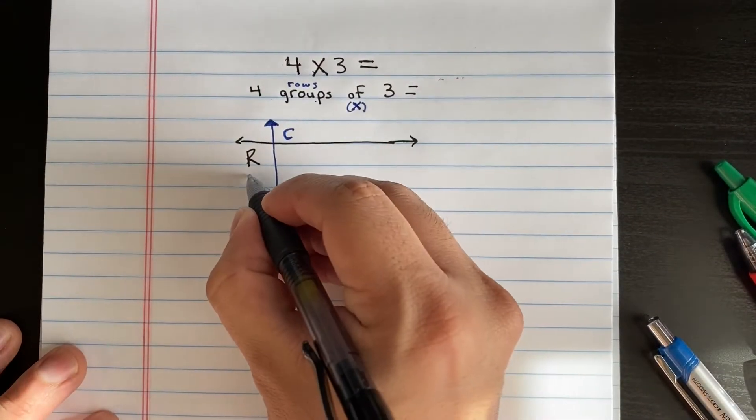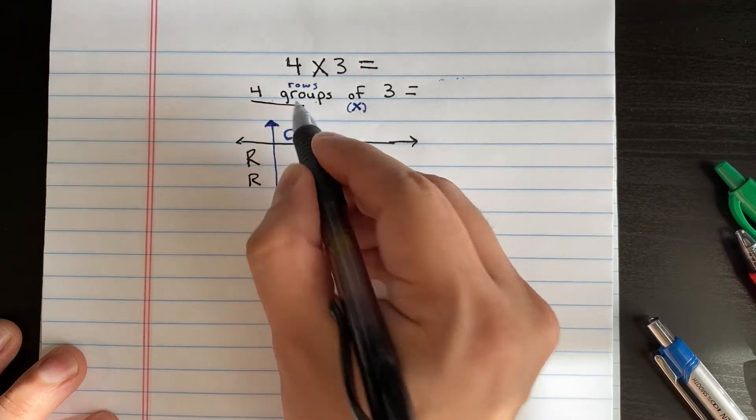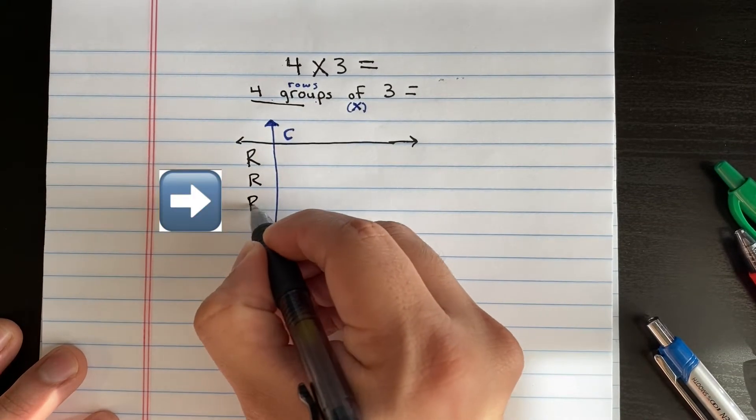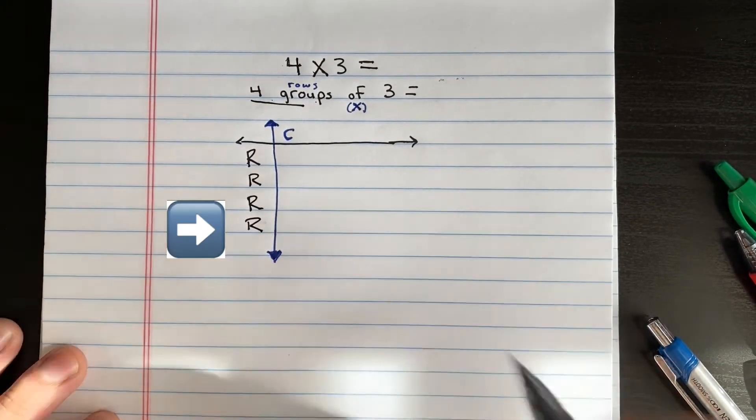So first, I'm going to draw my four R's so that I know I have four rows. One, two, three, and four. Perfect.